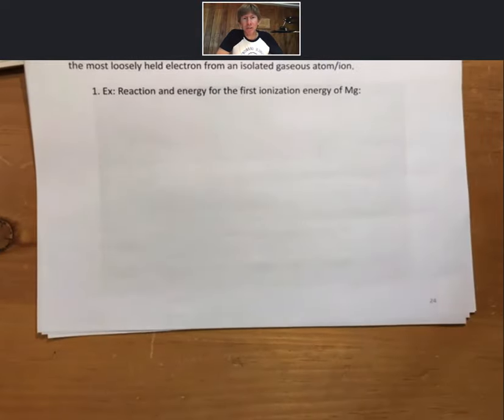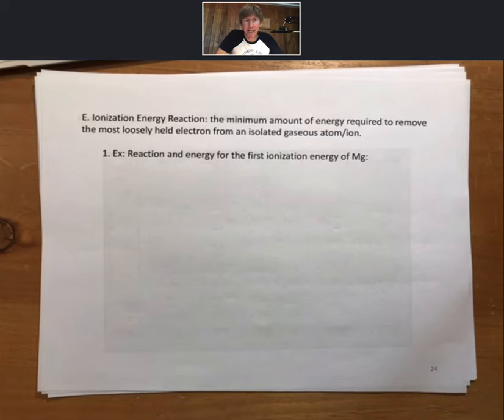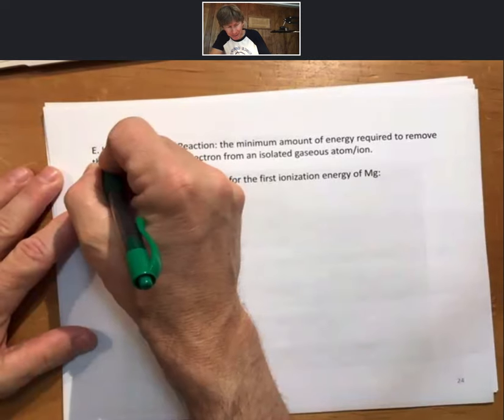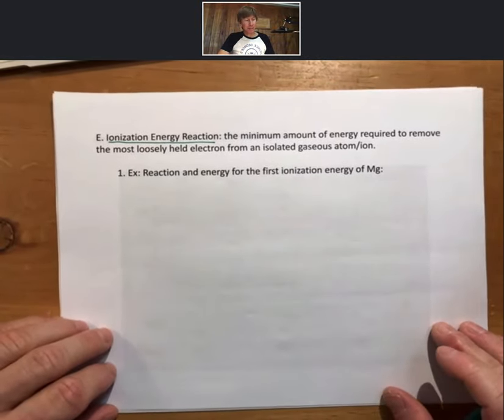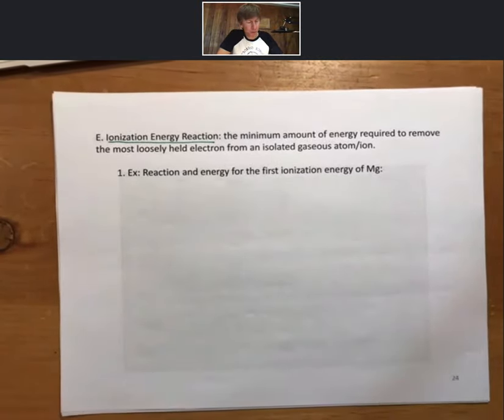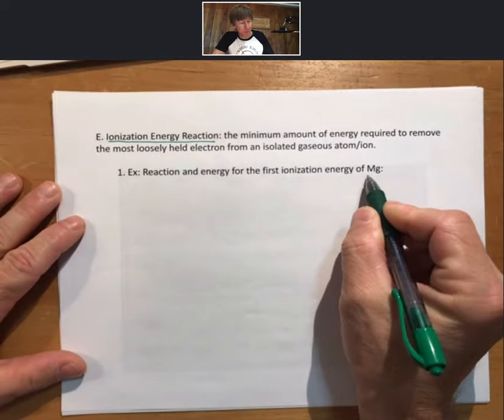Now, as far as losing electrons, let's look at something called the ionization energy reaction. That is another reaction that I can ask you to write. Yeah, I can ask you to write this one. So, let's underline that. Ionization energy reaction is the minimum amount of energy required to remove the most loosely held electron from an isolated gaseous atom or ion. And so, as an example, we'll do the ionization energy reaction for magnesium.